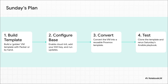Sunday is all about building your foundation — the part that pays off big time. You're going to create a golden VM template. You can use Packer if you're feeling fancy, or just do it by hand. A clean Debian or Ubuntu server is perfect. Get it set up just right with the basics: cloud-init, your SSH keys, all the latest updates. Then convert that into a reusable Proxmox template. The grand finale? Clone your brand new template, run Saturday's playbook against it, and watch the magic happen.